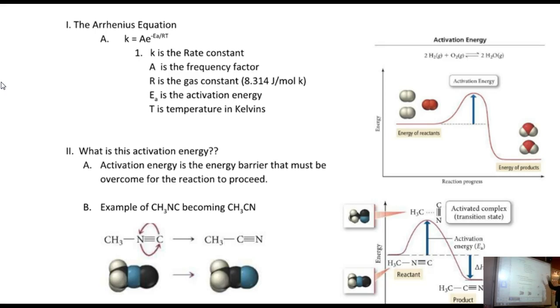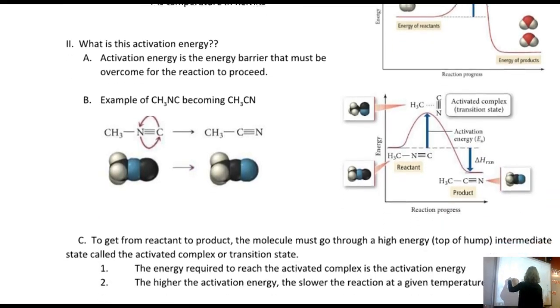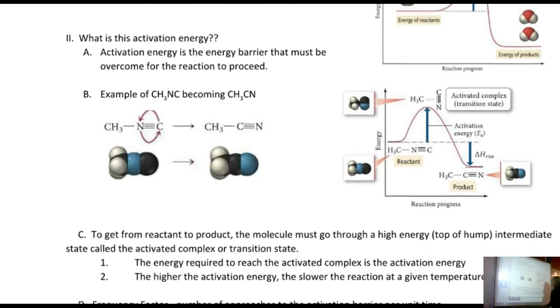You can see that we have energy on the left, reaction progress on the right. Here we have the reactants. And then in order to get to the products, there has to be this increase in energy. This is called the activation energy, the energy that's required to get a reaction started. It's from the energy of the reactants up to that higher hump, which is called the activated complex. So we have reactants, here's another example of it.